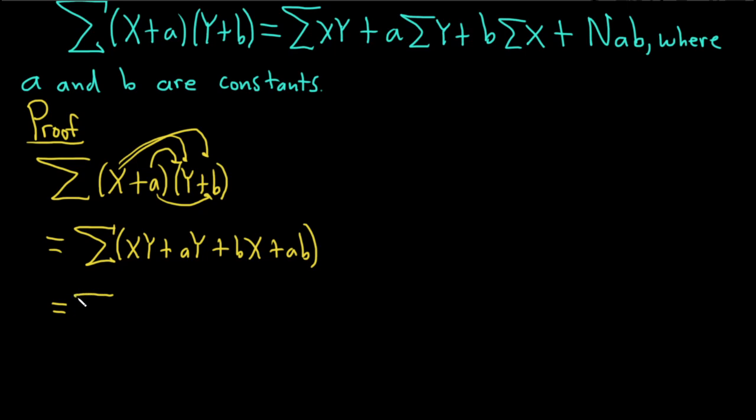So this is the sum of xy plus the sum of ay. But a is a constant, so we can pull that out. So it'll be a times the sum of the y's, plus the sum of bx. But b is a constant, so we can pull that out. So it'll be b times the sum of the x's plus the sum of ab.